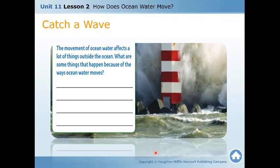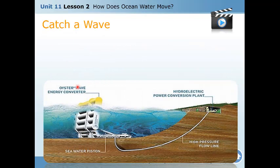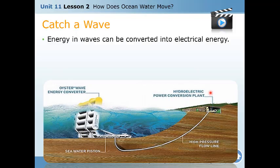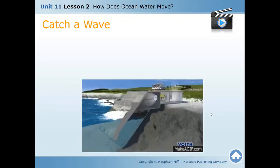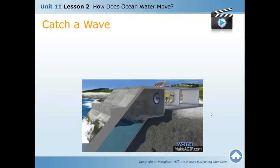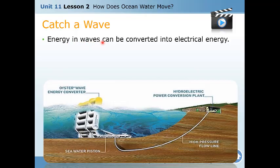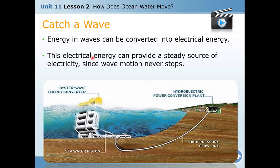The energy in waves is not only destructive. This is a hydraulic power conversion plant — they take the energy from the waves and convert it into electrical energy for our homes. That is a positive example of technology: wave motion energy can be converted into electrical energy and can provide a steady source of electricity since wave motion never stops.